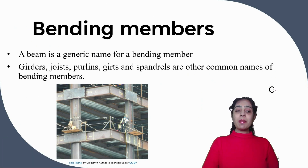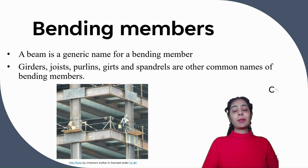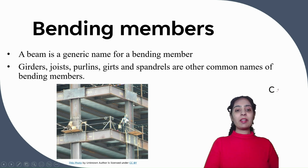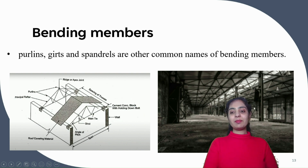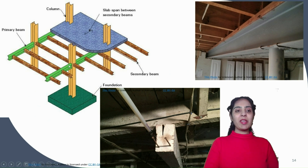Bending members. A beam is a generic name for bending members. Girders, joists, purlins, girts, and spandrels are common examples of bending members. In the figure, this is a spandrel. In the truss figure, these are purlins spanning from truss to truss. Girts are the horizontal members that support the wall. These are the primary beams — the beams on which secondary beams rest.